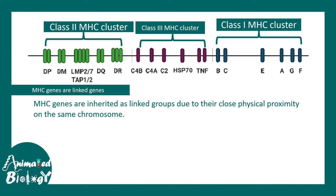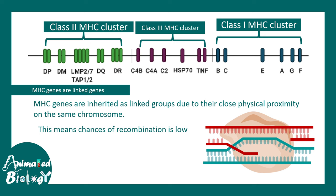MHC genes are inherited as linked genes, meaning these genes on the chromosome are physically located quite close to each other. Due to this physical proximity, recombination is literally not possible — the probability is super low. That is why they are segregated as a unit.